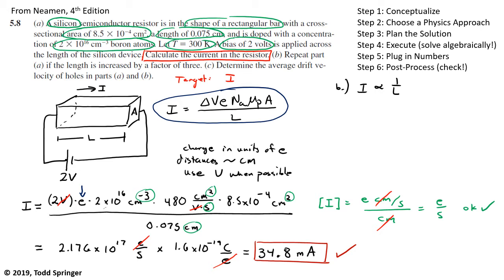So my I initial is going to be proportional to 1 over L initial. I final is going to be proportional to 1 over L final, which went up by a factor of 3, which means that my final current is my initial current divided by 3. And so you can just take 34.8 milliamps divided by 3, and it's 11.6 milliamps. So very simply, I can solve this part B without doing hardly any work because of all the work we did in part A.